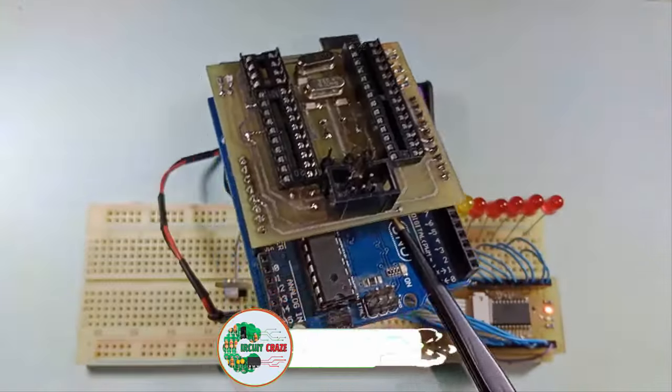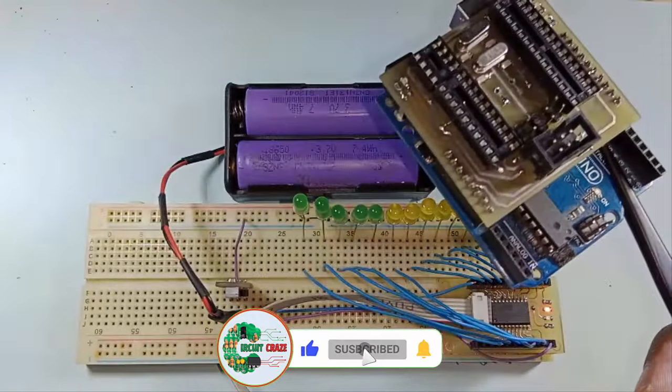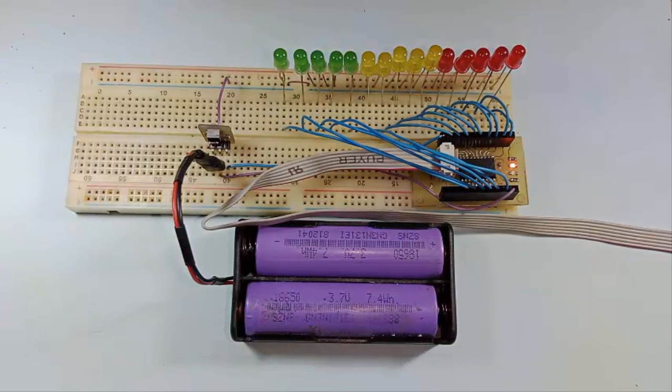Attach this homemade programmer on Arduino and then connect both boards with 6 pin ISP cable. Now connect 7.2 volt battery with circuit. A yellow LED is blinking after 3 seconds.